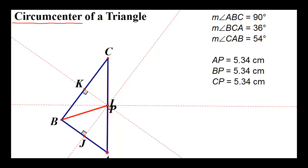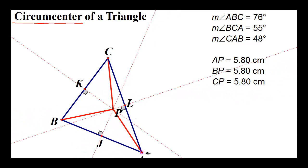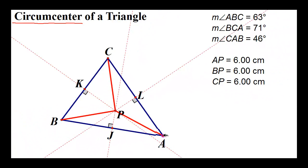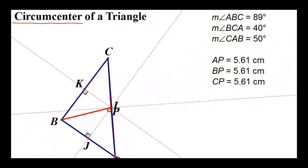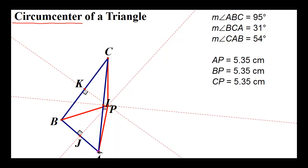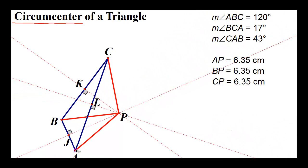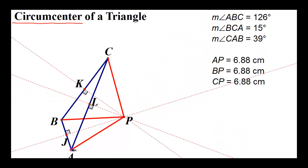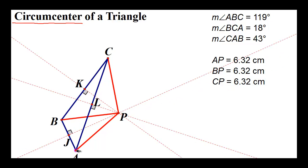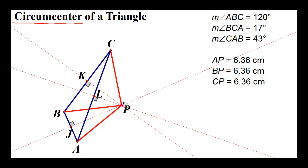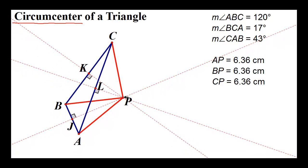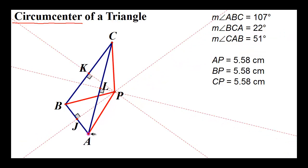That's different from an acute triangle. Starting with an acute triangle, turning it into a right triangle, and then continuing — angle B becomes greater than 90 degrees, and the circumcenter goes completely outside the triangle. That's a bit hard to get your head around at first, but it's what happens with an obtuse triangle.